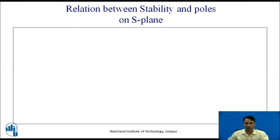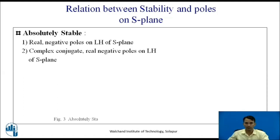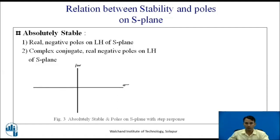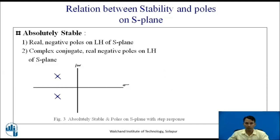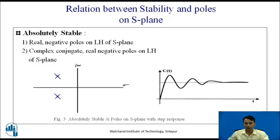Now let us see the relation between stability and poles on the S-plane. For an absolutely stable system, the conditions are: first, the poles should be real and negative on the left hand side of the S-plane, giving a bounded step response. When poles are complex conjugate and real negative on the left hand side of the S-plane, the step response will be a decaying sinusoidal, which is also the response of an absolutely stable system.